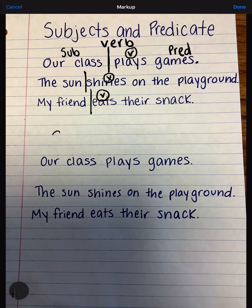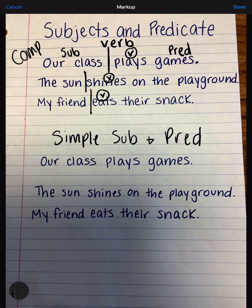Now we're going to talk about simple subjects and predicates. What we saw up here is the complete subject and predicate. Complete means it's going to be maybe one word, but usually more than one word. Simple means that we are picking out one word.